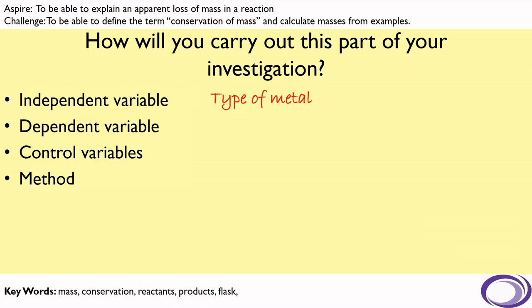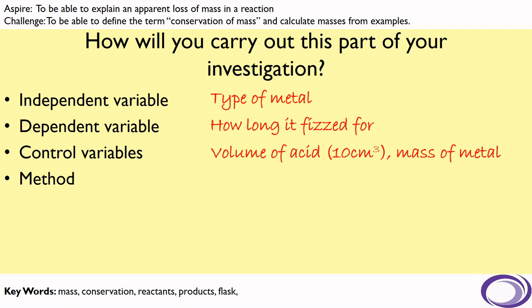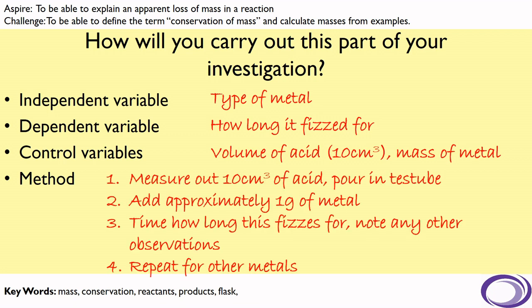The independent variable would be the type of metal, as that is what we are changing in this investigation. We will be measuring how long the reaction fizzed for, but we will also be noting some other observations throughout those reactions. The control variables would be the volume of acid and, as much as possible, the mass of the metal being used. Our method would be to measure out 10 cm³ of acid and pour that into our test tube, add approximately one gram of metal and time how long this reaction fizzes for, noting any other observations, and then repeat that for other metals.